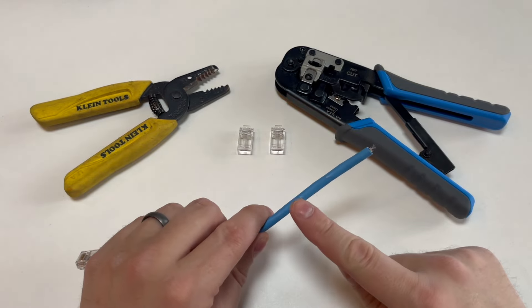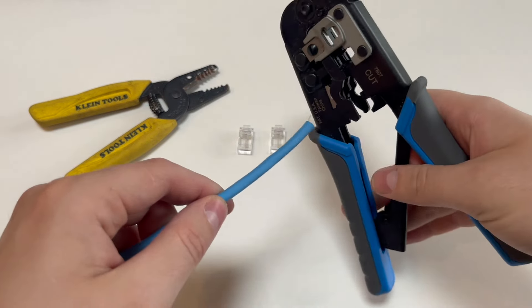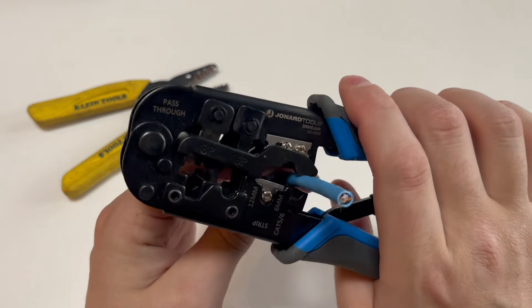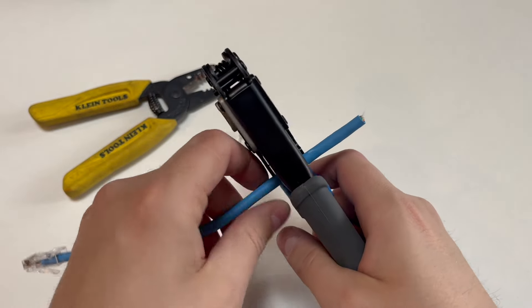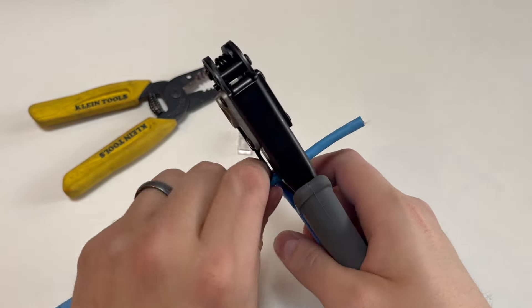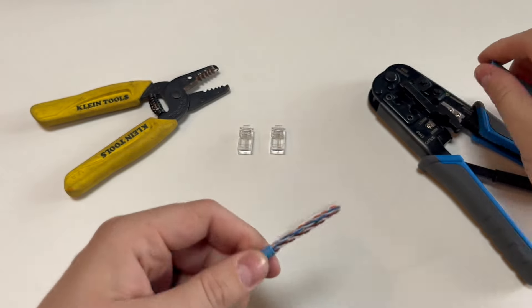To start, use the built-in cutter or wire strippers to cut away about 2 inches of the outer jacket. Make sure not to cut any of the individual wires inside. I'm using CAT-6 cable here, but the process is the same for CAT-5E.